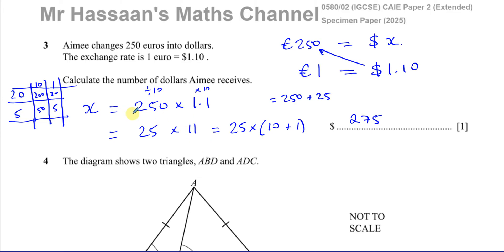Another way you can do it from here is directly. You can think of this as, this is increasing 250 by 10%. So it's going to be 250 plus 10% more. 10% of 250 is 25. So it's 250 plus 25, which is 275. There's multiple ways you can do this using mental maths.